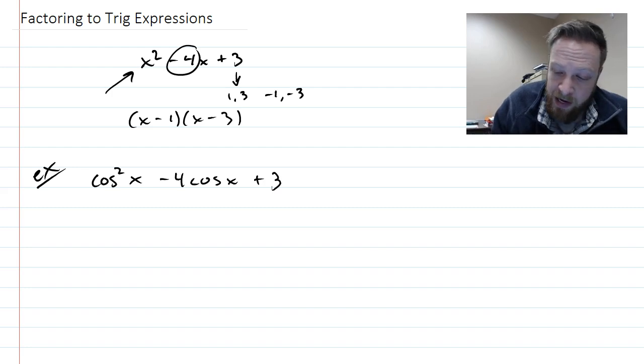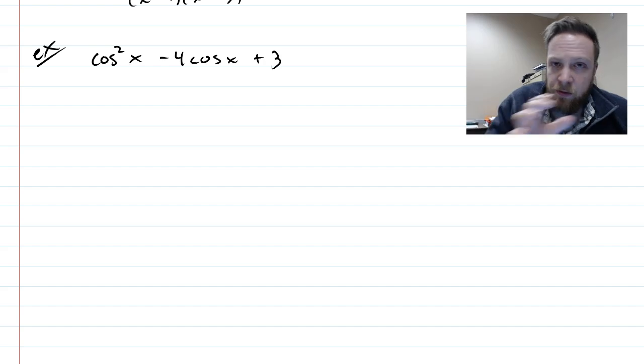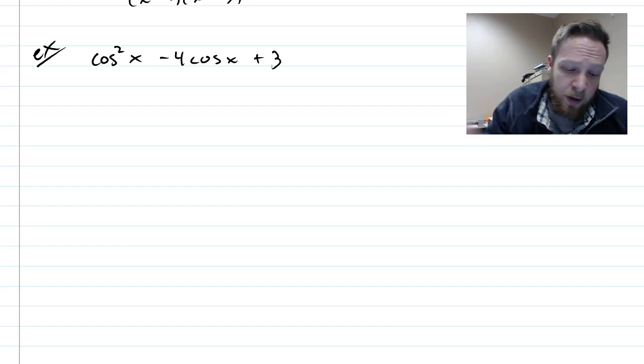And so what you would do if you encountered this without that example I gave you, you would have to recognize a pattern here that that is a quadratic. It's an x squared, an x, and a number. But there's a cosine in place of those things.